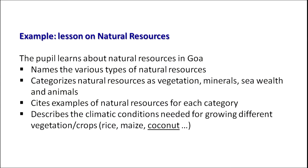So on the topic of natural resources, some learning outcomes I have listed: the pupil learns about natural resources in Goa, names the various types, categorizes natural resources as vegetation, minerals, sea wealth and animals, cites examples for each category, and describes the climatic conditions needed for growing different vegetation or crops such as rice, maize, coconut and so on.